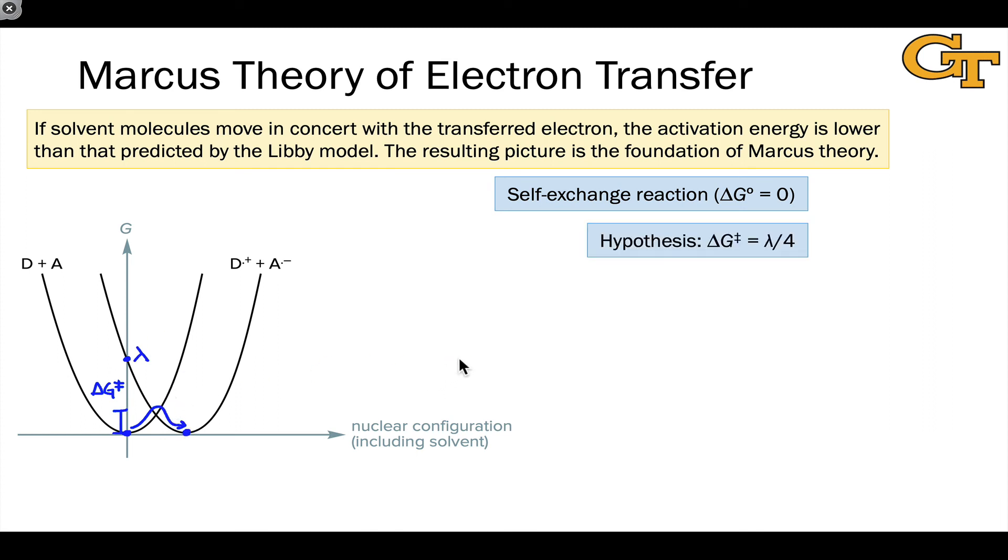In fact, we only need to go to lambda over four to surmount this barrier for a self-exchange reaction. It's a fun exercise to verify geometrically that the energy when we reach this crossing point for a self-exchange reaction is lambda over four.